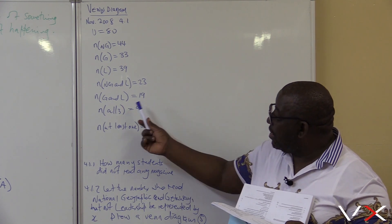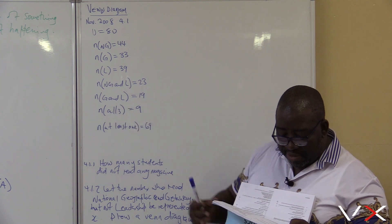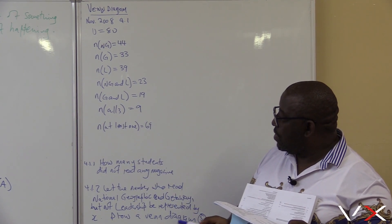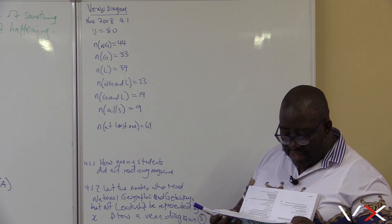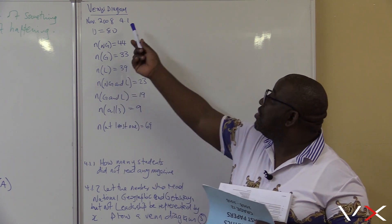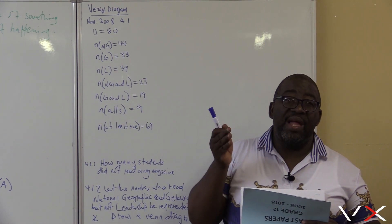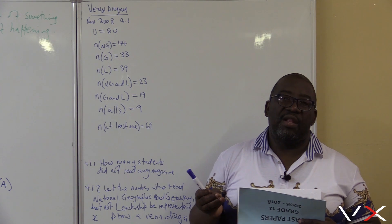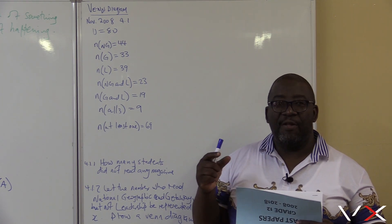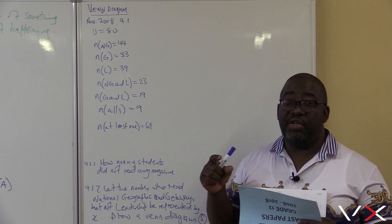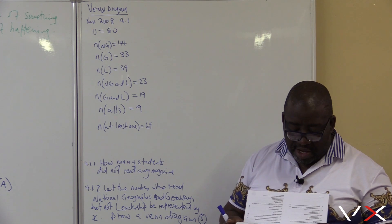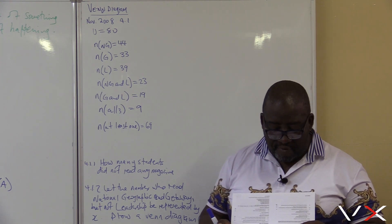Yes, 23. 19 read both Getaway and Leadership Magazine. 9 read all three magazines. 69 read at least one magazine. So out of 80 students, 69 at least read one magazine. Now you can tell how many did not read any magazines. If 69 read at least one, those who read zero — who did not read any magazine — would be 80 minus 69.